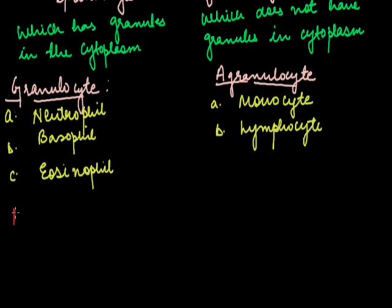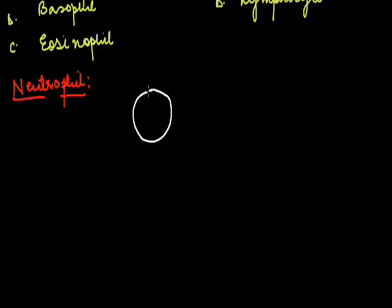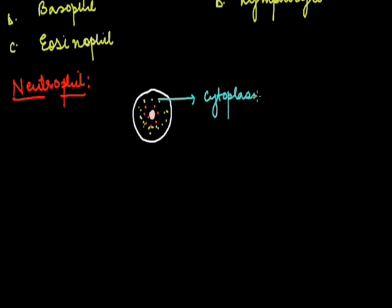Let us start our discussion with neutrophil. If we discuss the structure of neutrophil: this is the plasma membrane. All WBCs have a rounded structure in the centre called as the nucleus. The nucleus is surrounded by cytoplasm, and in this cytoplasm there is presence of granules.